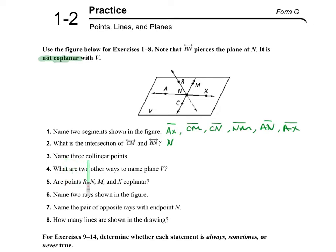Next one: name three collinear points. Collinear points are points that are on the same line. One example of collinear points is A, N, and X, or C, N, M. There are no other three collinear points. Remember that point R is outside of the plane, and V is just the name of the plane — it's not a point.